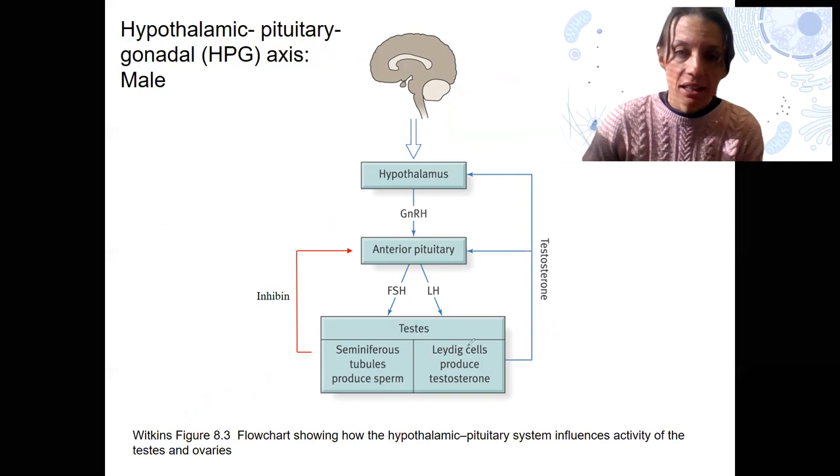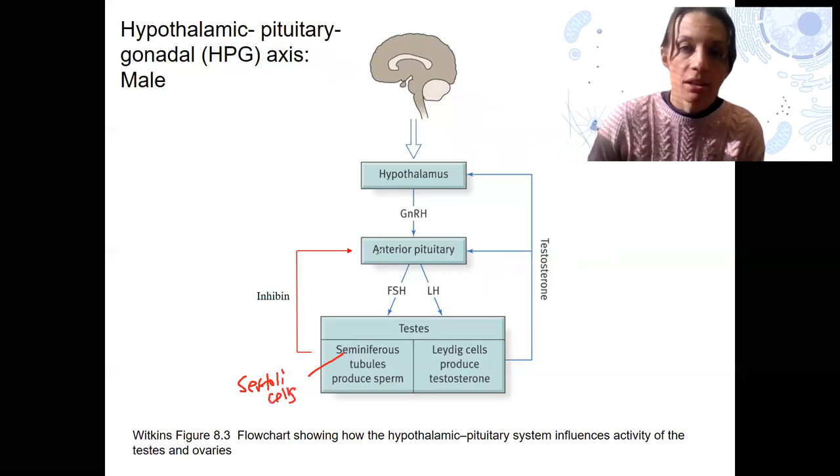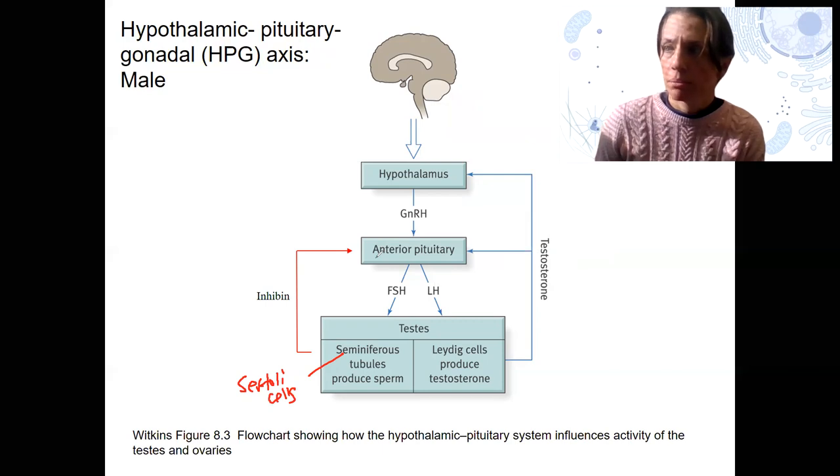LH stimulating Leydig cells, and testosterone feeds back. FSH stimulating the seminiferous tubules, that would directly be the Sertoli cells. And those are going to produce inhibin to feed back to the anterior pituitary. So inhibin would be produced when sperm count is high.